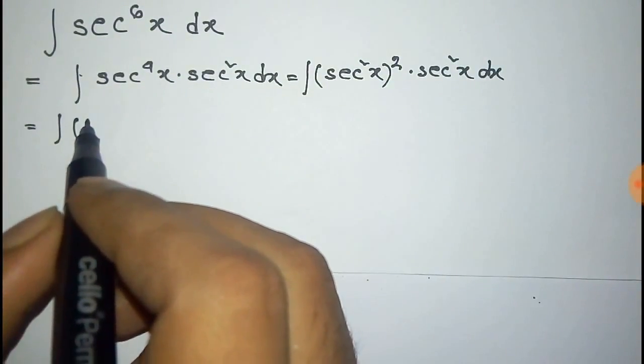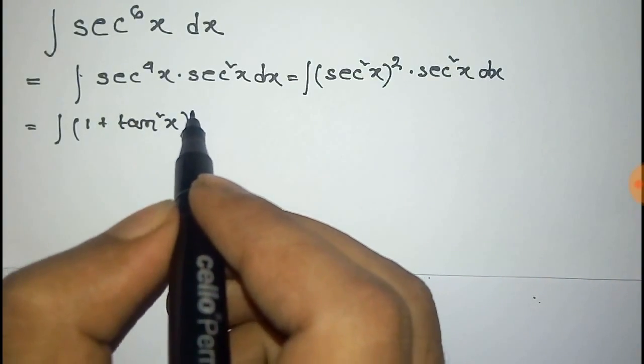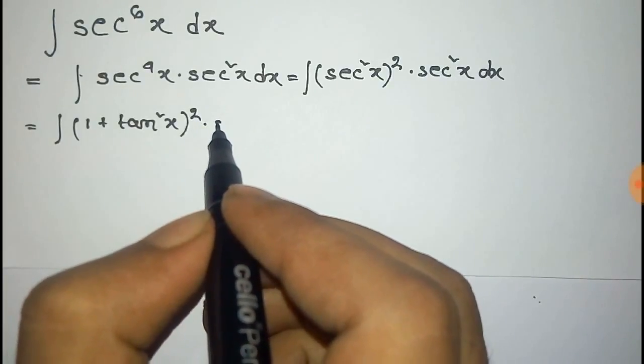Now this sec square can be written as 1 plus tan^2x total whole square into sec^2x dx.